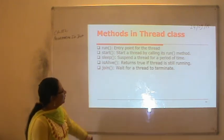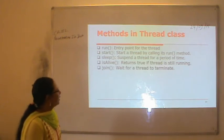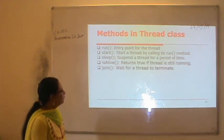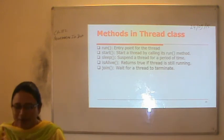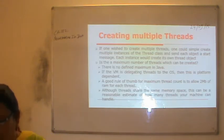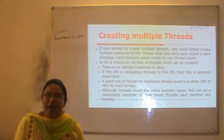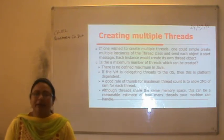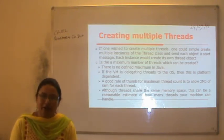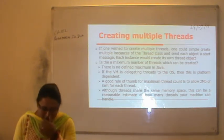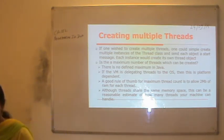Key Thread class methods: run() is the entry point for the thread; start() starts a thread by calling its run method; sleep() suspends a thread for a period of time specified in milliseconds; isAlive() returns a boolean — true if the thread is still running; join() is used to wait for a thread to terminate.